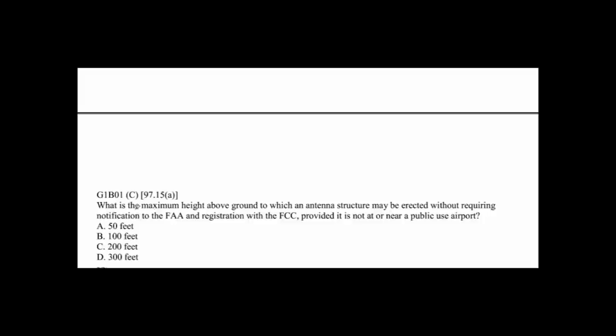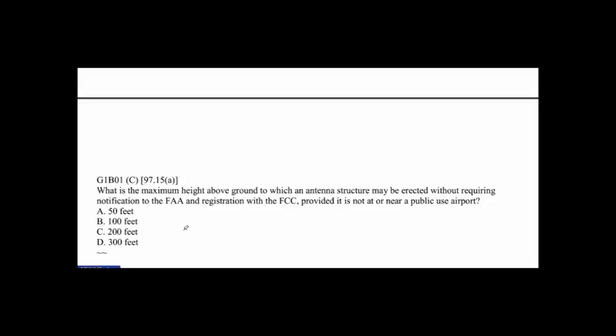G1B01: What is the maximum height above ground to which an antenna structure may be erected without requiring notification to the FAA and registration with the FCC, provided it is not near a public use airport? The answer is 200 feet. That's the maximum height that the structure may be erected. Are you likely to put up an antenna over 200 feet? Probably not. Just remember 200 feet.